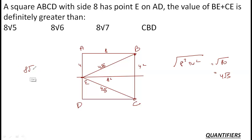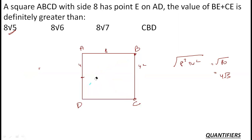So 8√5 is the minimum distance they have to travel, meaning BE + CE is definitely greater than or equal to 8√5 — with the important word being 'or equal to.' It is not less than 8√5; it will be more or equal. So the answer from the given options is 8√5.